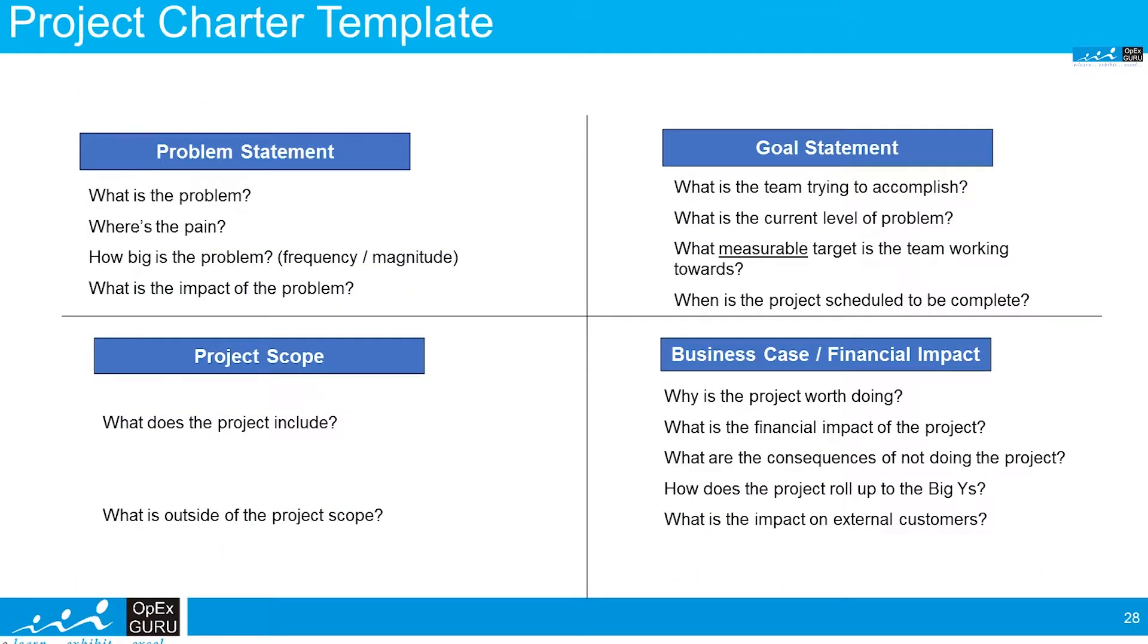The fourth element is called Business Case and Financial Impact. Business case is very important. Business case means why we are working on this particular project. If we solve this particular problem, what is going to be the financial benefit to the organization?